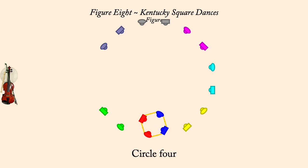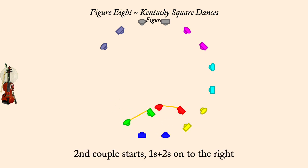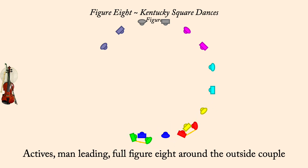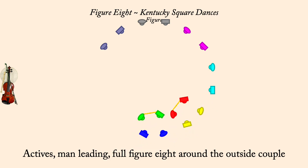Twos start, go right. Full figure eight around the outside couple. Circle left four.